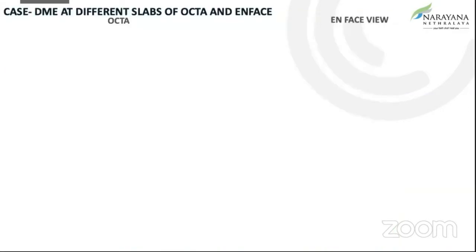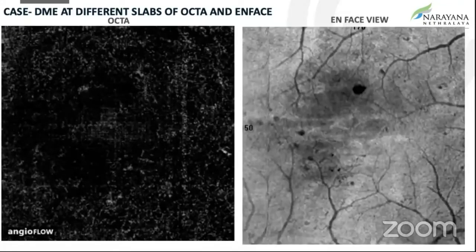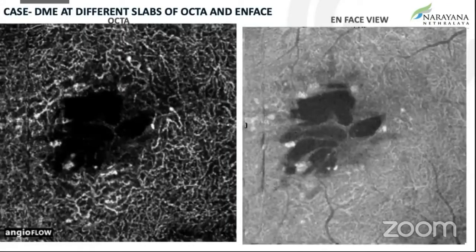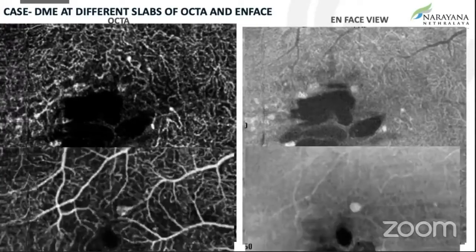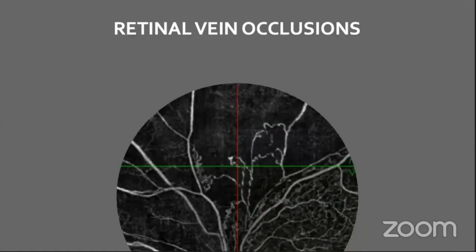If you look at the DMA across the different slabs of OCTA and compare it with the en-face, this is how you see it in the outer retina, and this is the deep DCP — you can see it is so well compared. We don't tend to see the en-face that often, but it is definitely helpful. And this is the superficial plexus.